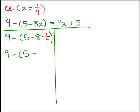So I copy the 9 minus parentheses 5 minus and then what's 8 times 1 fourth? You can cancel, 4 goes into 8 twice, right? So that's just 5 minus 2.